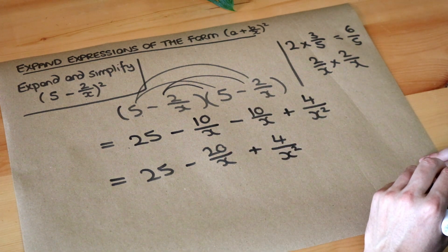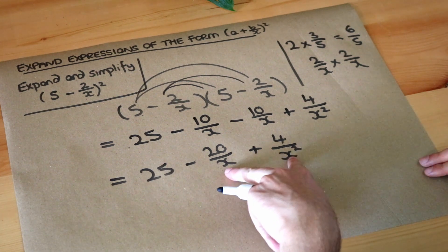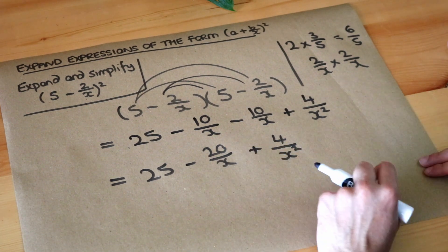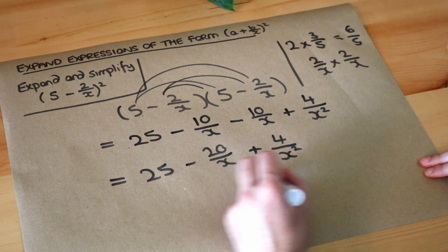And there's not really much else we can do at this stage because these have different denominators so we can't directly add or subtract them. So that is the final answer.